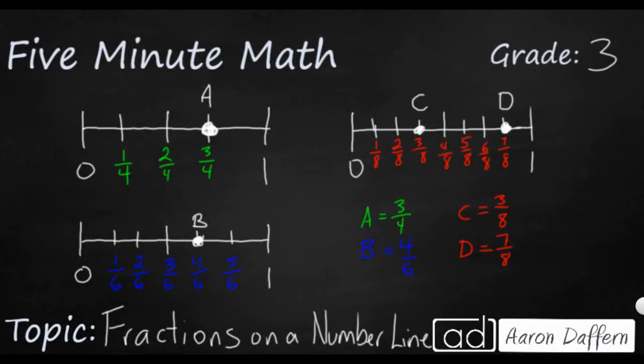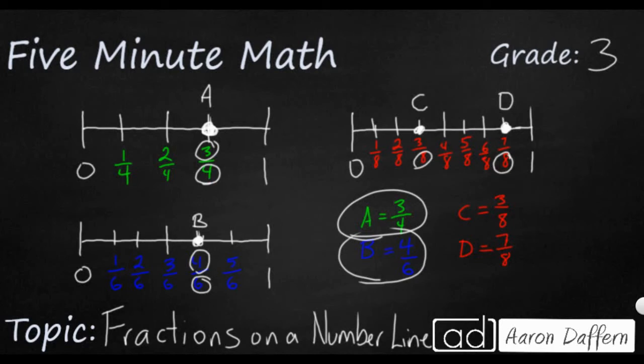The top number line is broken up into 4 parts, and this A is on the 3rd one over, so A equals 3 fourths. The bottom one is broken up into 6 parts, and this B is on the 4th tick, so B equals 4 sixths. And this final one has 2 spots. It's broken up into 8 pieces, and C is on the 3rd one, and D is on the 7th one, so 3 eighths and 7 eighths.